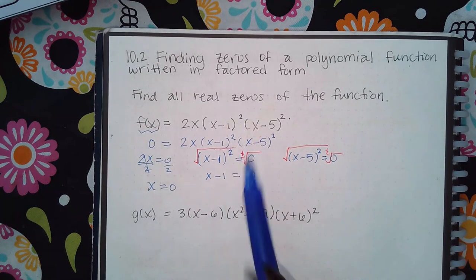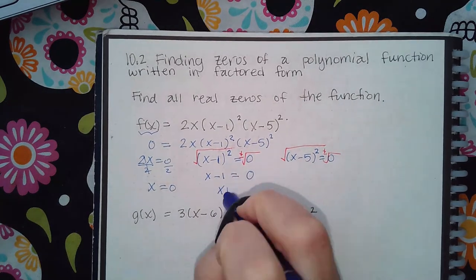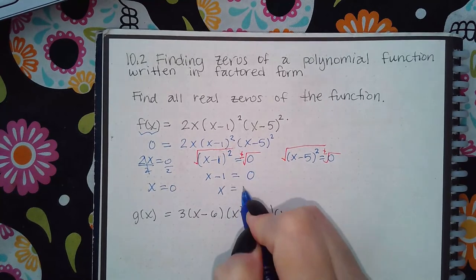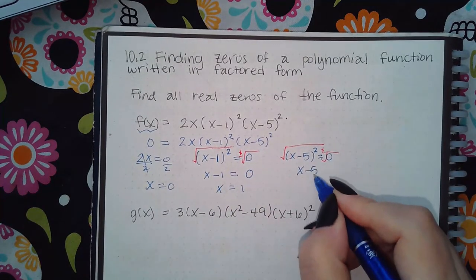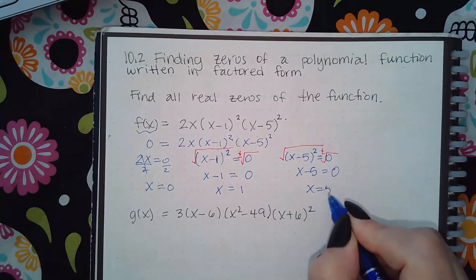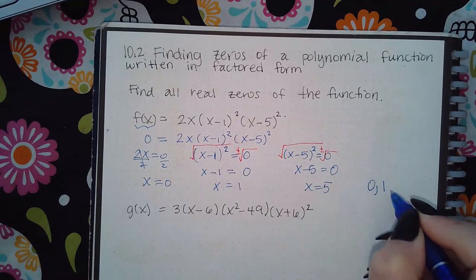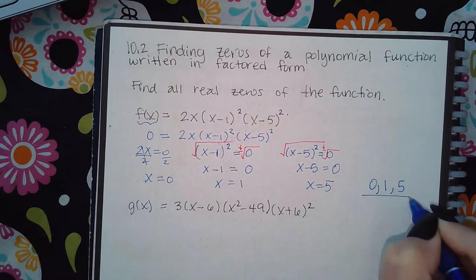Okay, and if I add 1 to both sides here I will get x equal to positive 1. Same thing here - this will go away, square root of zero is zero, and if I add 5 I will get 5. So what are all the zeros? The number zero, the number one, and the number five. These are all the x-intercepts of the polynomial function.